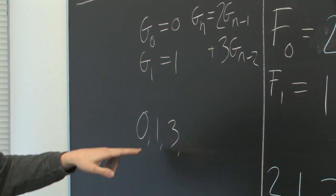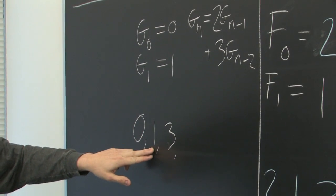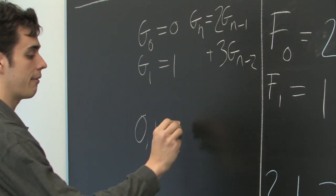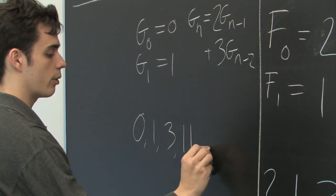Now, for this term, 2 times 1 is 2, 3 times 3 is 9. Add them together, we get 11, and so on and so forth.